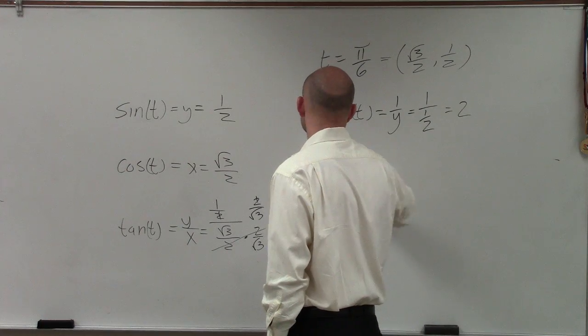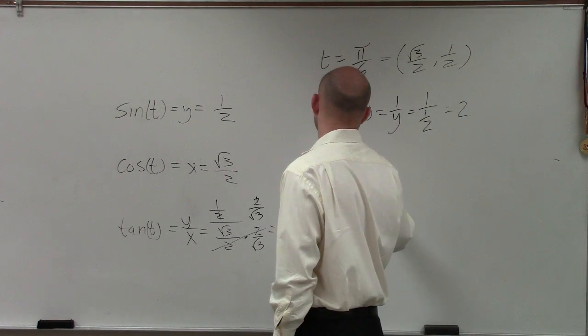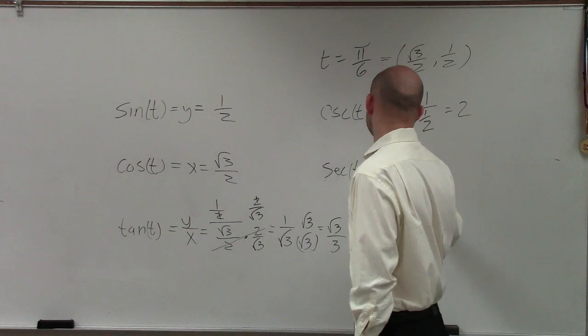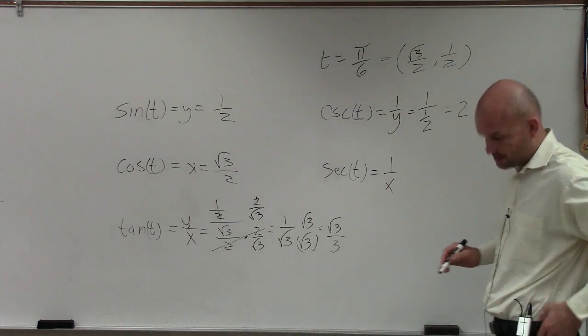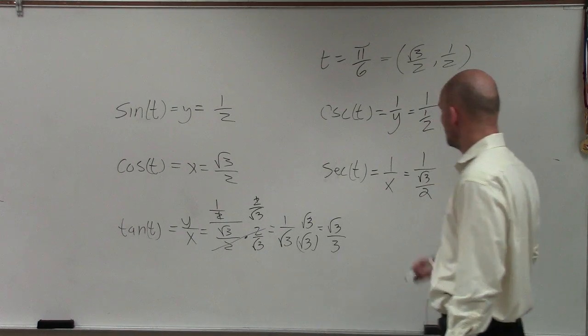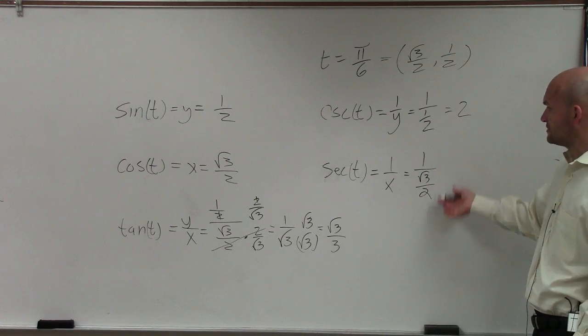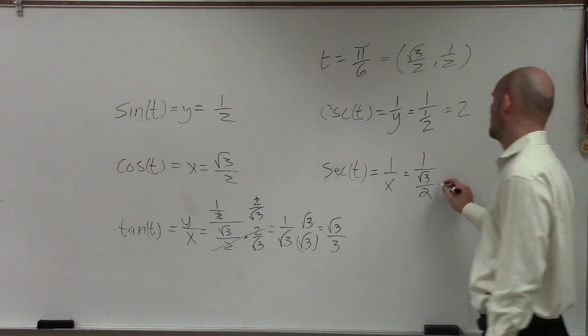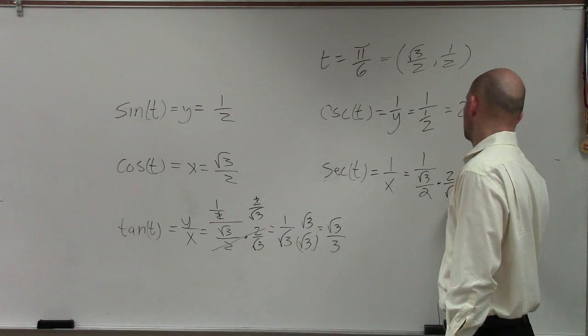Then let's do the cotangent. Not cotangent. Secant. Secant of t is 1 over x. So in doing 1 over x, I need to do 1 over the square root of 3 over 2. Again, multiply by the reciprocal on top and bottom. So I'll show you this one.